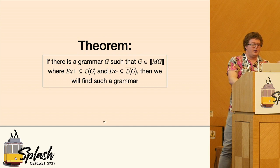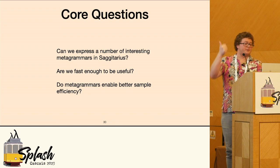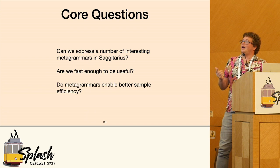But what about the evaluation? We wanted to test in the evaluation some core questions: Can we express a number of interesting metagrammers in Sagittarius? Are we fast enough to actually be useful? And can we enable better sample efficiency?